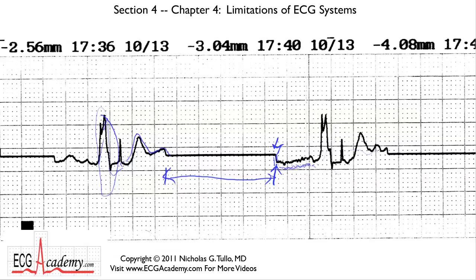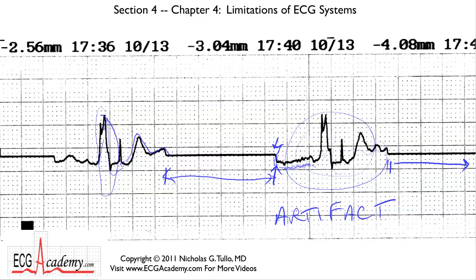There may be some noise in this, so this doesn't look like a good signal. But from here to here, again, you see someone took a ruler and drew it. This is a kind of make-and-break artifact. Artifact is the word I use when it's not real — the heart isn't really doing this. It's just that the electrical circuitry is showing you something that doesn't really exist.